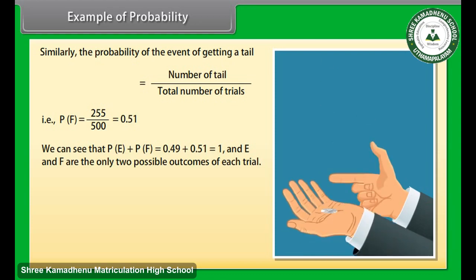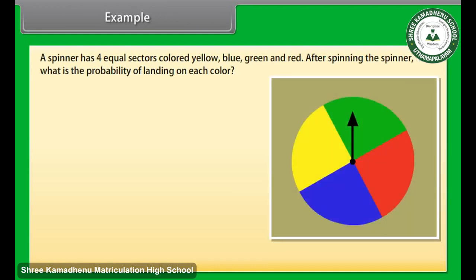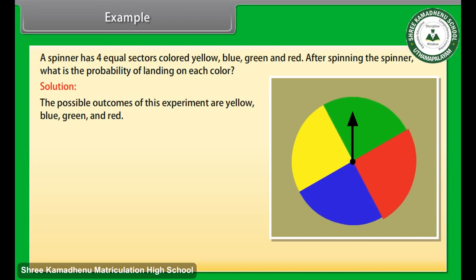Example: A spinner has four equal sectors colored yellow, blue, green, and red. After spinning the spinner, what is the probability of landing on each color? Solution: The possible outcomes of this experiment are yellow, blue, green, and red. Now let's find the probabilities.